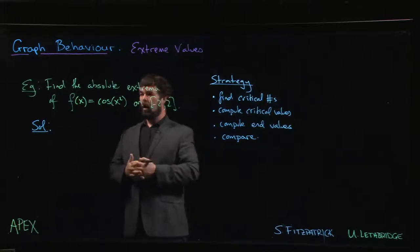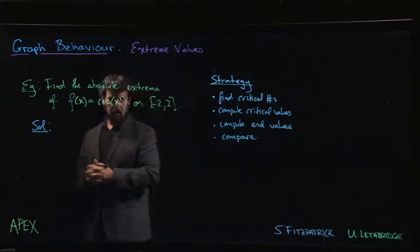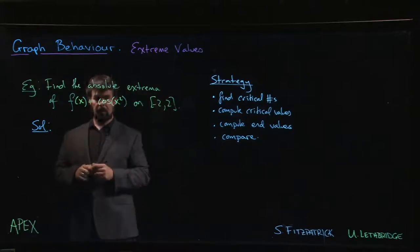Let's look at another example. This time we've got a trig function involved. So we've got cosine of x squared, our interval is from minus 2 to 2. We're going to apply the same strategy that we applied to the previous examples.